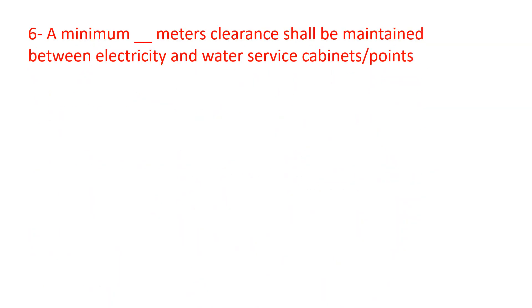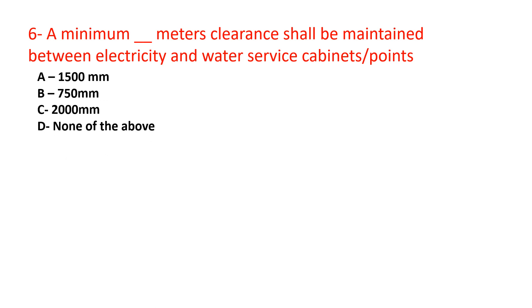Question number 6: A minimum [blank] meters clearance shall be maintained between electricity and water service cabinet points. Your answers are: a. 1500 mm, b. 750 mm, c. 2000 mm, d. None of the above.